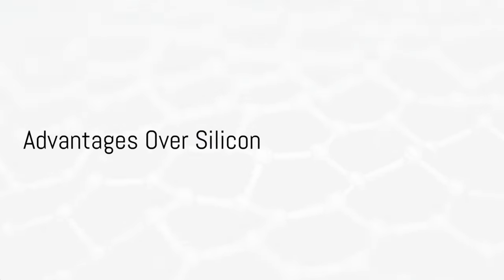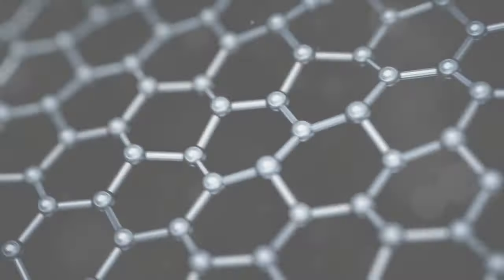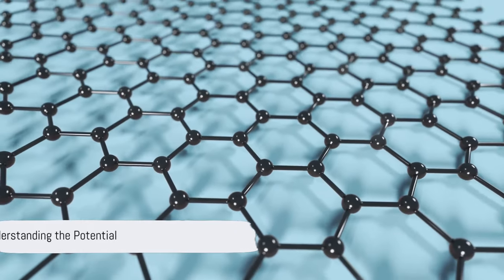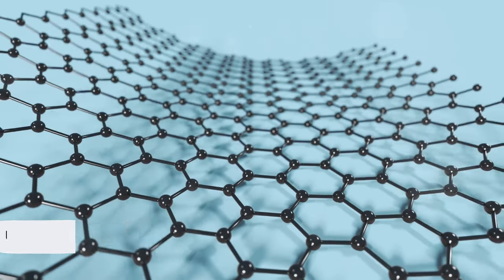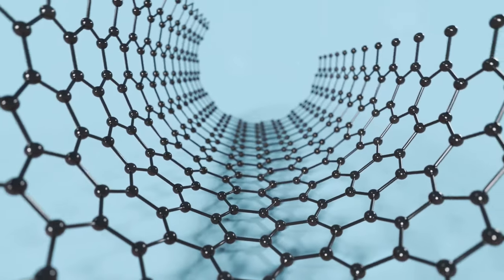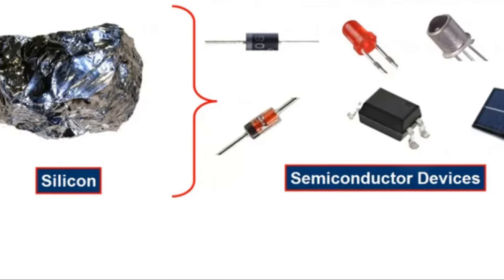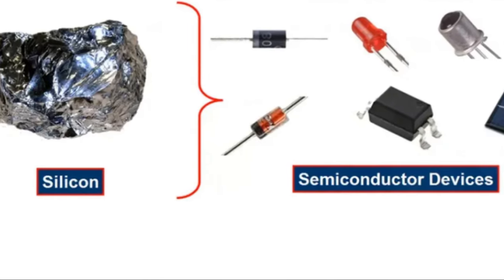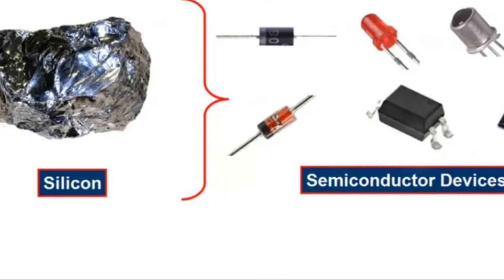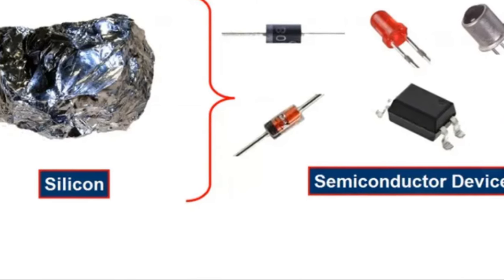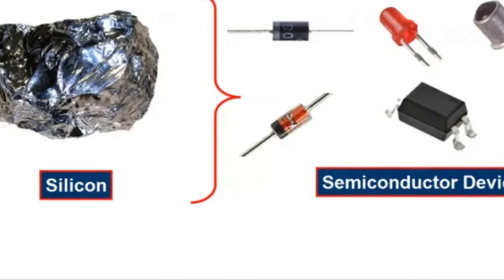How does a graphene semiconductor compare to a traditional silicon one? This question is a gateway to understanding the game-changing potential of graphene semiconductors. Let's start with the basics. Silicon has been the star of the semiconductor world for decades, powering everything from computers to smartphones. However, as our demand for faster and more efficient technology grows, silicon is beginning to show its limitations.